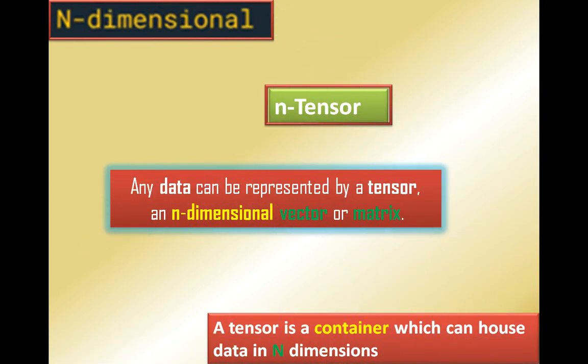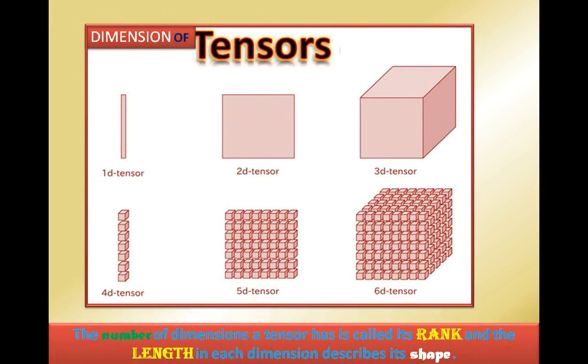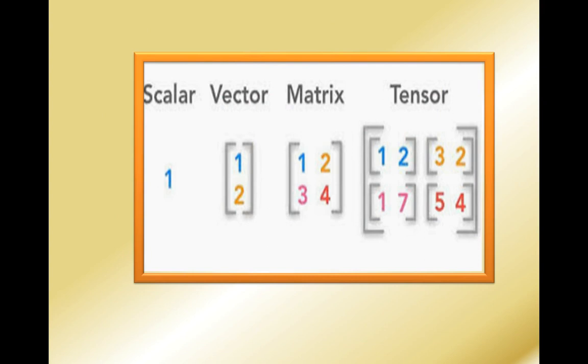Any data can be represented by a tensor as an n-dimensional vector or matrix. A tensor is nothing but a container which can house data in n dimensions. The number of dimensions defines its rank, and its length defines its shape. So scalar, vector, matrix, and tensor should now be clear.